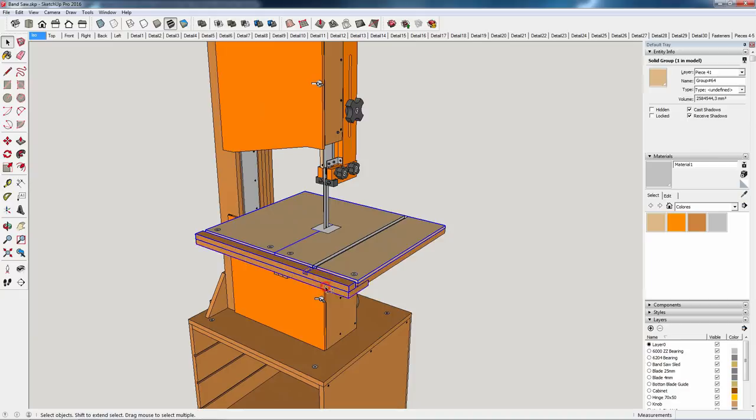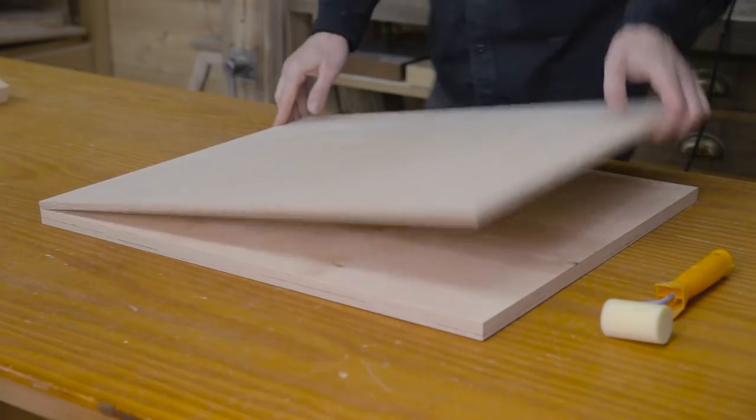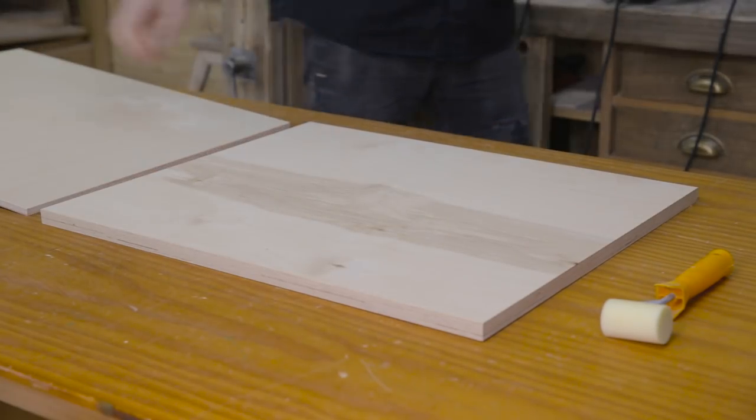At this point I can machine the parts that make up the bandsaw's table. In order to make it thicker, I'm going to glue these two pieces of plywood together.